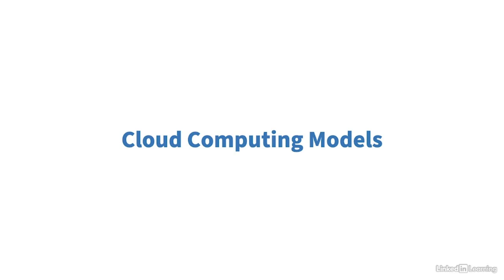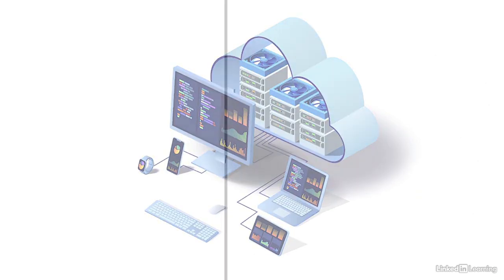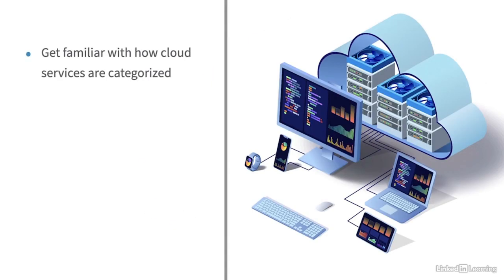Have you ever wondered how hackers manage to get into cloud computing environments? If you can imagine them breaking into a single organization's network or even into your personal computer or smartphone, then you're on your way to understanding how hackers break into cloud computing. Cloud computing really just means running IT services on somebody else's equipment somewhere else over the network. We're going to focus on cloud computing deployment models and individual service models, because understanding these can go a long way toward securing IT services in the cloud.